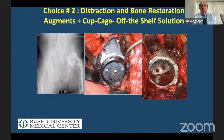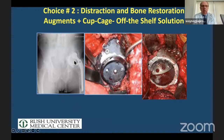Choice number two — which I do almost always — is the combination of distraction, bone restoration with augments, and/or a cup-cage. It's an off-the-shelf custom solution. You can see this defect reconstructed with augments and supplemented with a half cage.